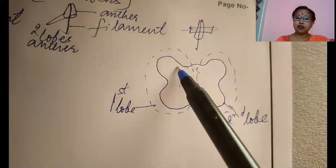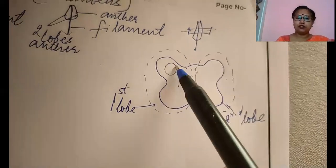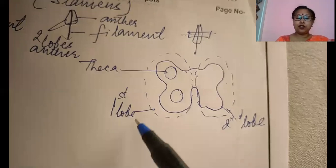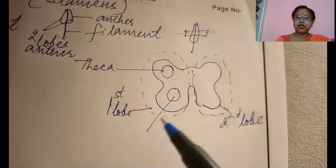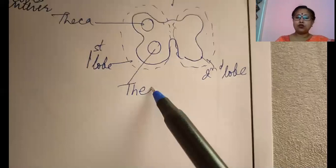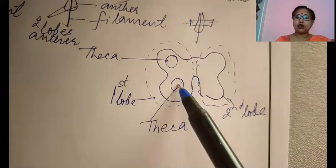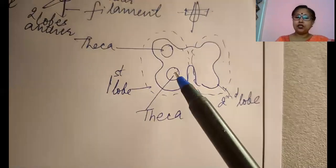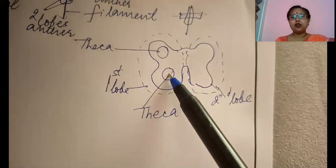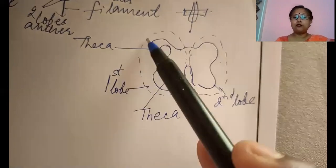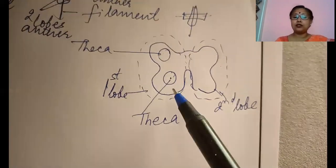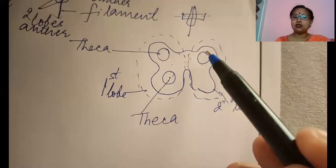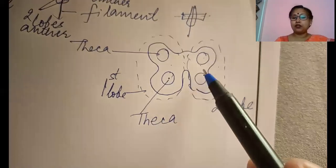These two lobes contain further two chambers each. This is known as theca — a cavity which stores spores. There are two thecae present in one lobe, so we use the term di-theca. Each and every lobe is provided with two thecae, and because in one anther there are two lobes, there are a total of four thecae — four chambers.